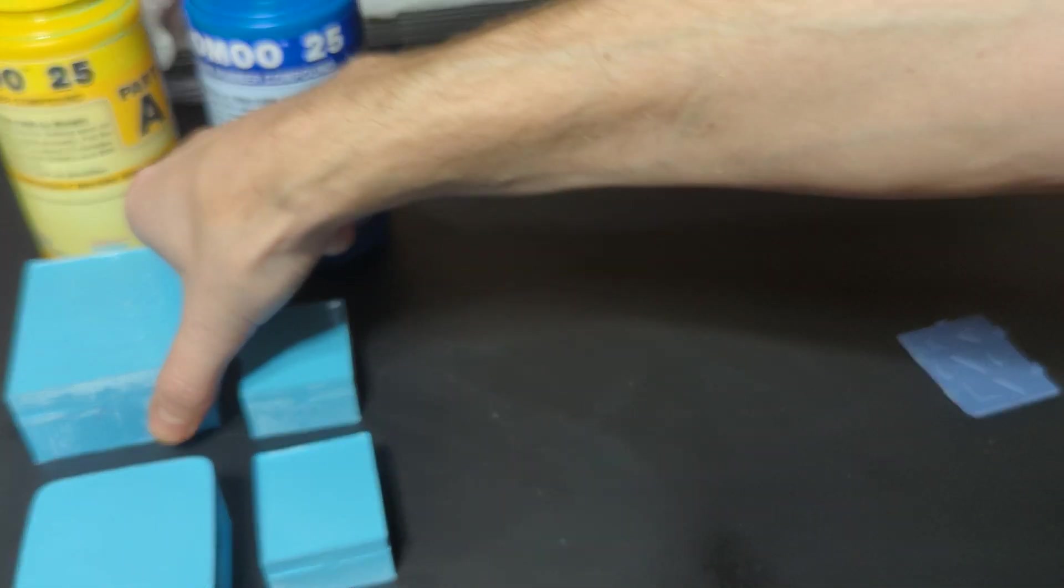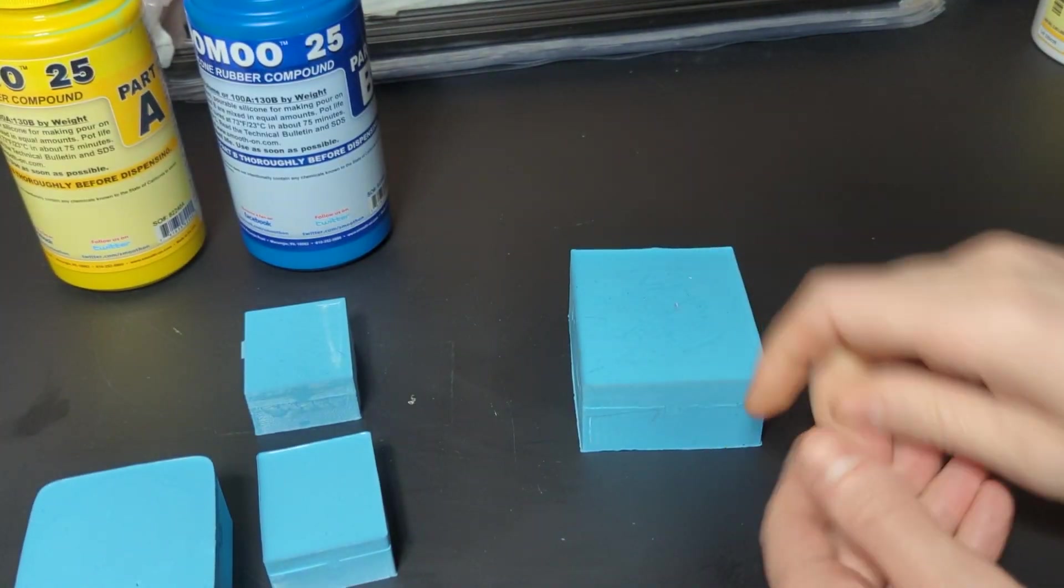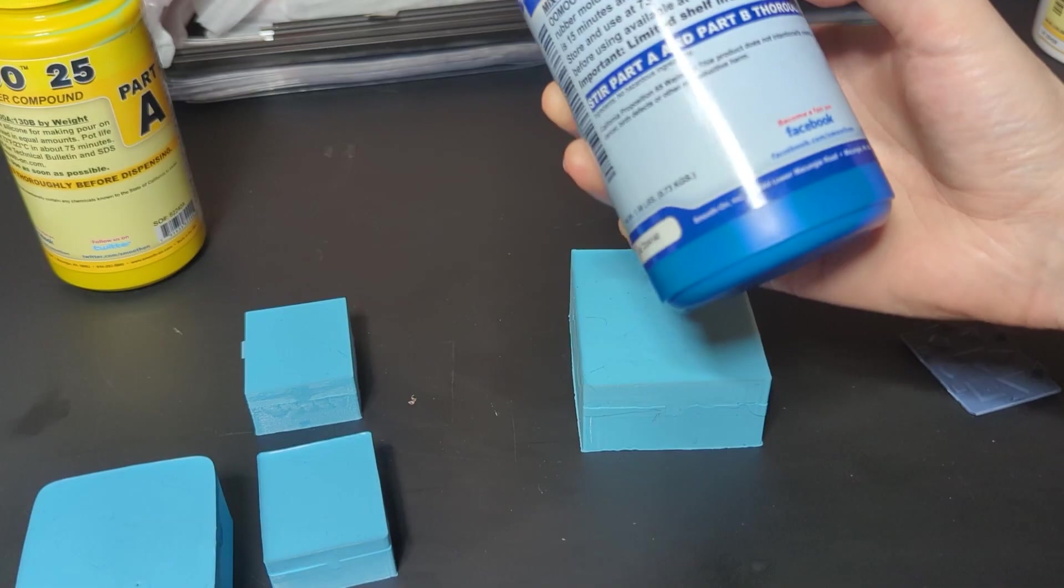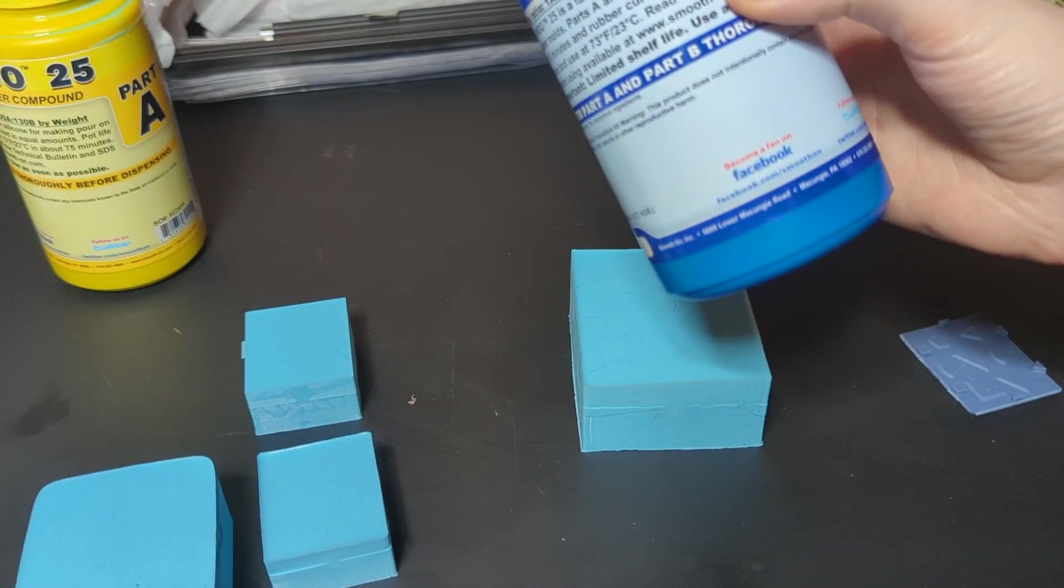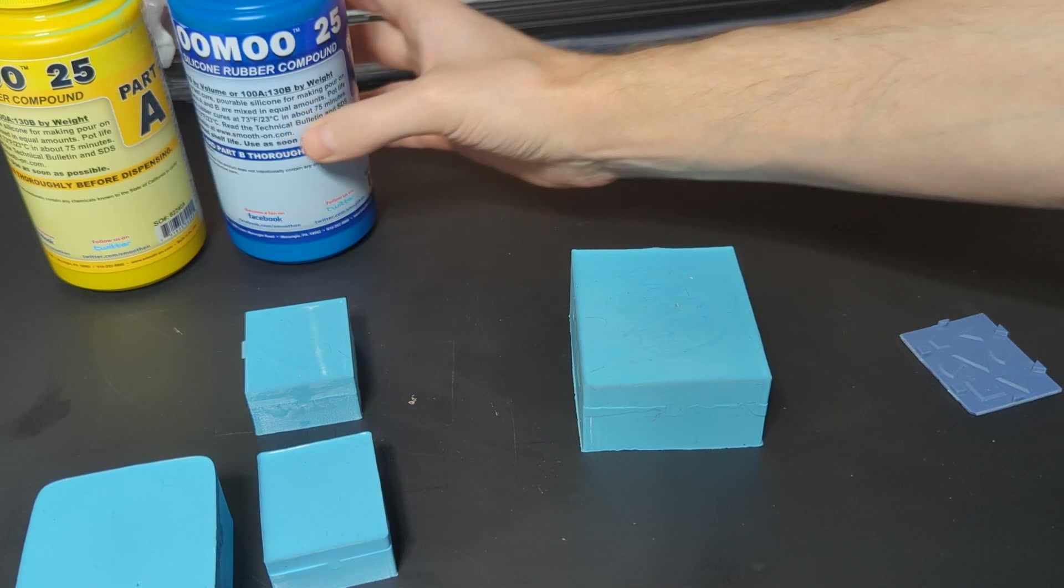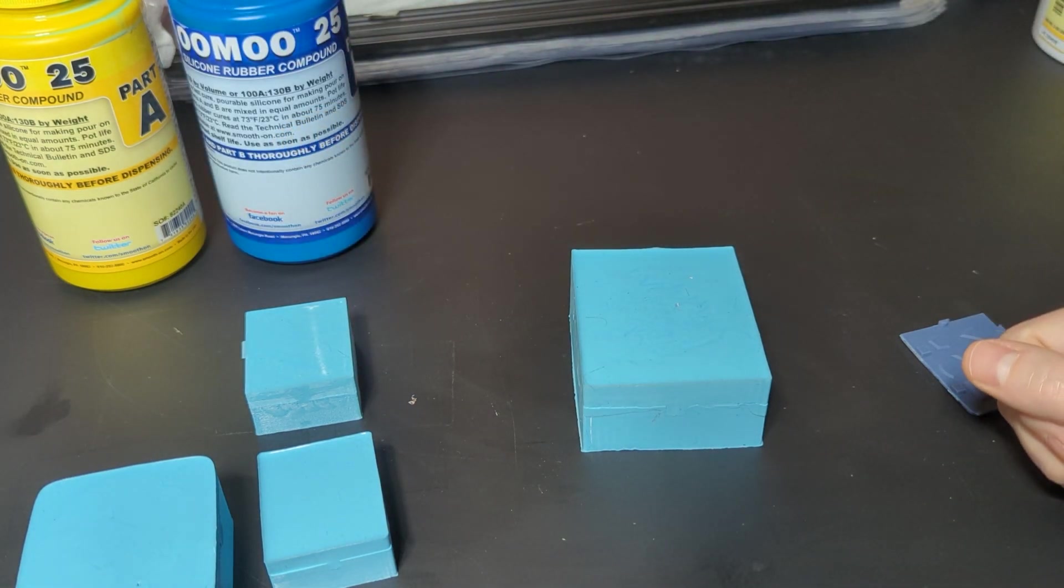So that was the first type of mold I made and I used this Oomoo 25, which is a 25 shore hardness. Typically when I use tin cure silicones they're a bit more fragile and they break more.